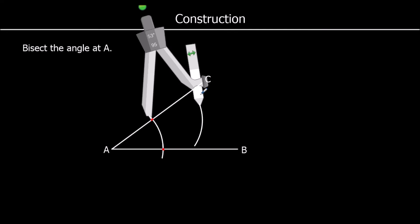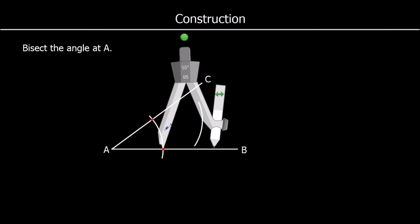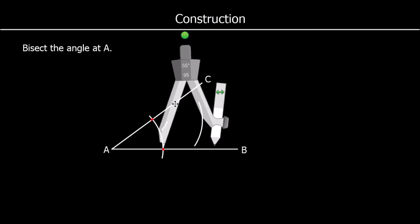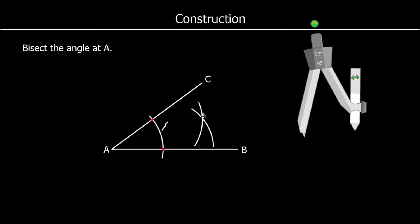I'm going to draw part of a circle from one of the points, keeping the compass the same length, then draw part of a circle from the other point. Now I've got a point equidistant from these two points, so that will bisect the angle. There is my bisected angle — I've split the angle exactly in half.